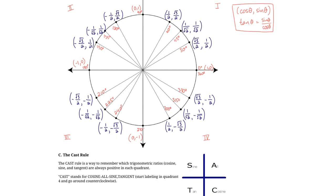The CAST rule isn't just made up — let's explain it using the unit circle. In quadrant 4, cosine should be positive: all x-coordinates are positive, so cosine is positive. The y-coordinates are all negative, so sine is negative. For tangent — since tan = sin/cos — a negative sine over a positive cosine gives a negative result. So only cosine is positive in quadrant 4.